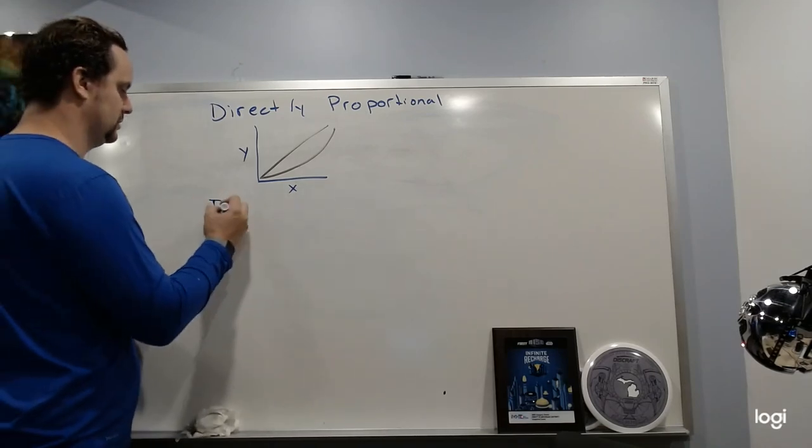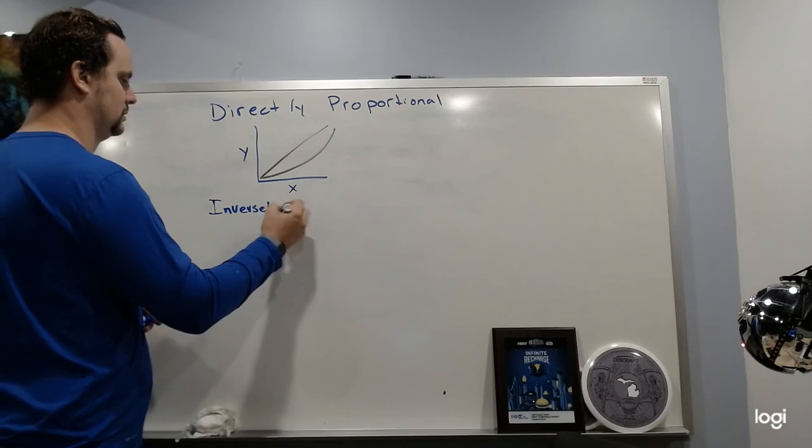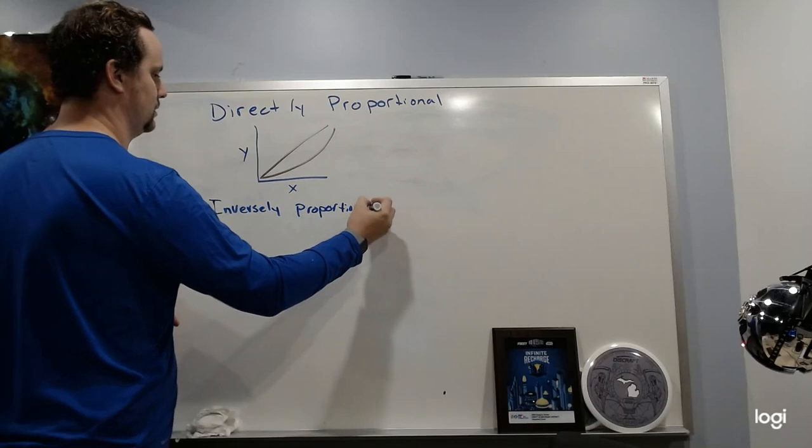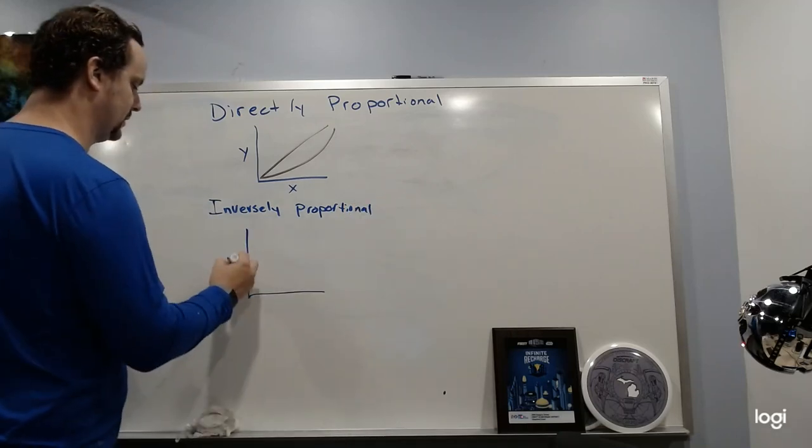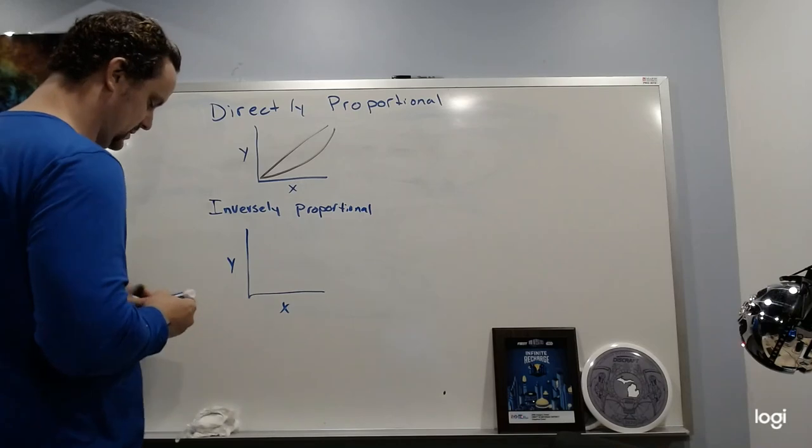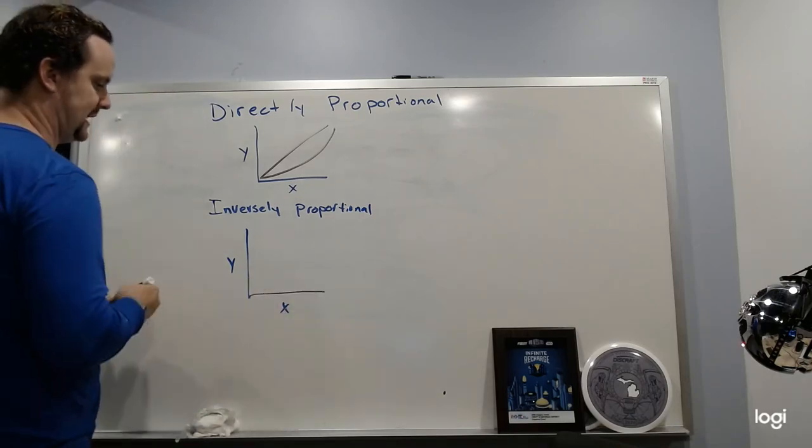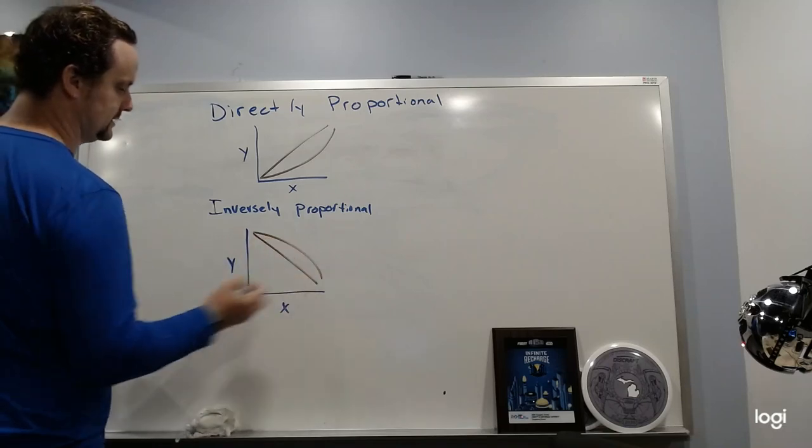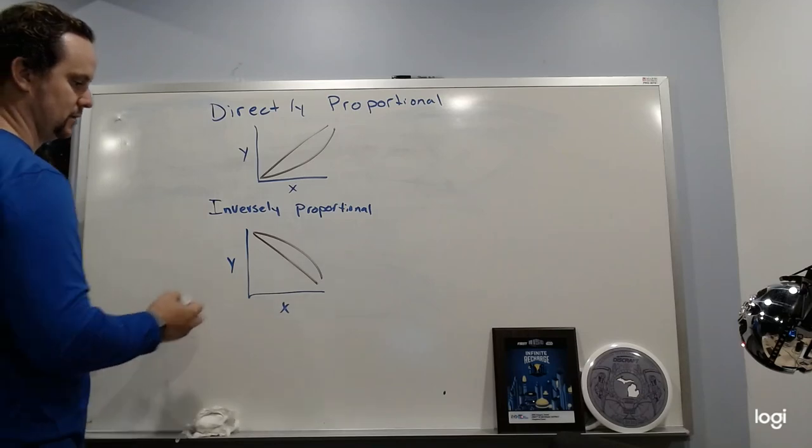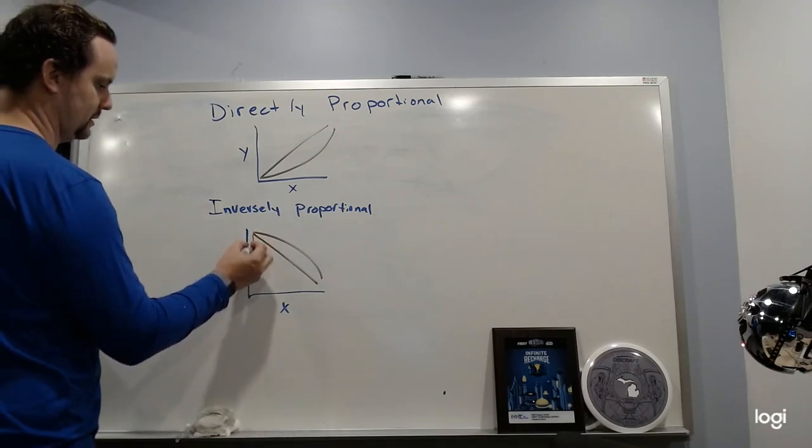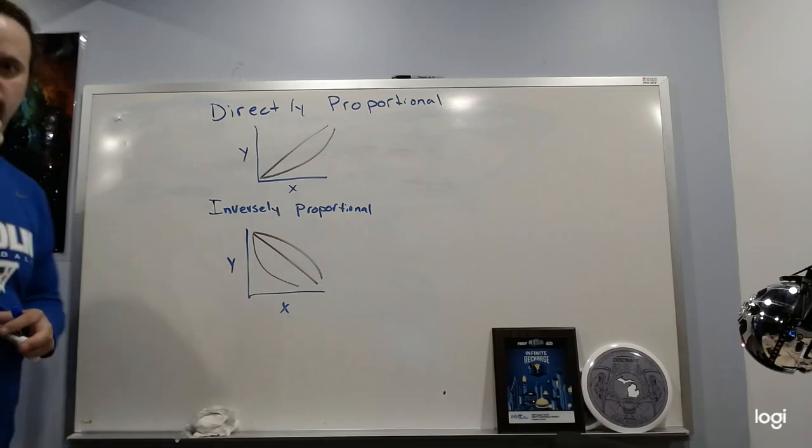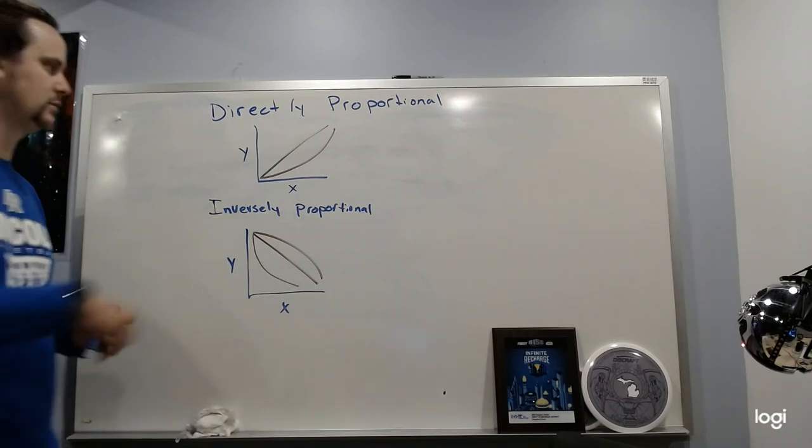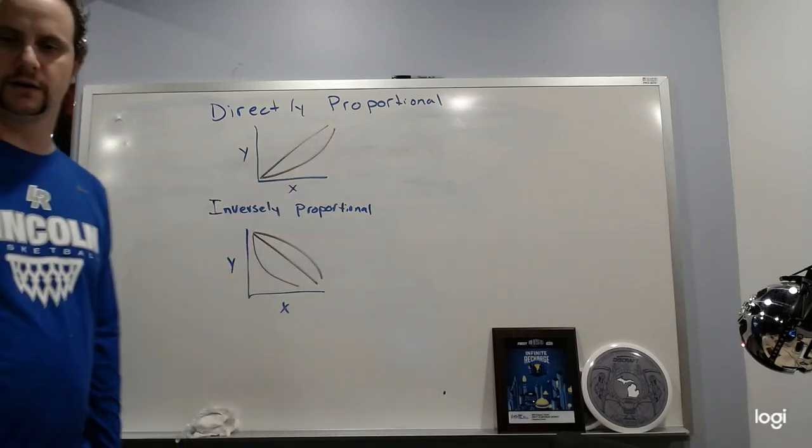Inversely proportional is where they go opposite directions. So as X goes up, Y goes down. Or the same thing, the opposite of that. You got those two types of lines, or you could have something like this. Either those three: inversely proportional. Linear would be just a straight up line, so we've kind of already covered that in a previous video.